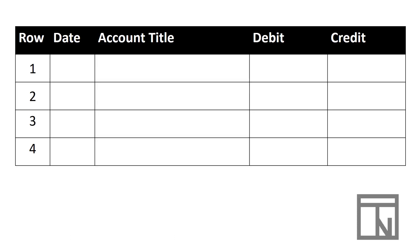Journals in accounting have a very specific format. You will have individual rows where you can record your journal entries, typically numbered to help identify specific transactions. They will have a place to record the date, the accounts, and the debits and credits. This is why the analysis process is so important — if we already understand the accounts and the debits and credits associated with them, recording a transaction in a journal is very simple.